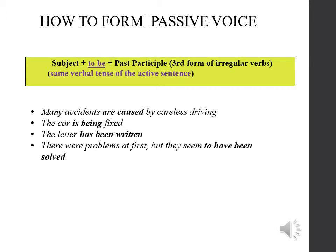We form the passive with the verb 'to be' in the appropriate tense and the past participle of the main verb. For example: 'Many accidents are caused by careless driving,' 'The car has been fixed,' 'The letter has been written.' There were many problems at first, but they seem to have been solved.